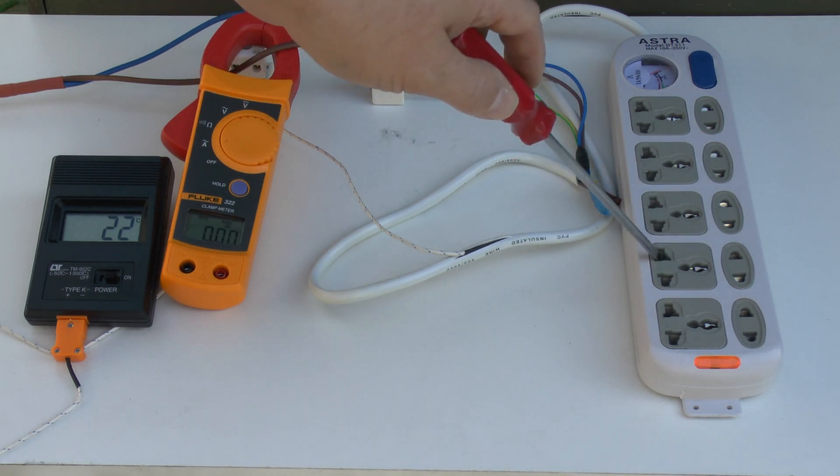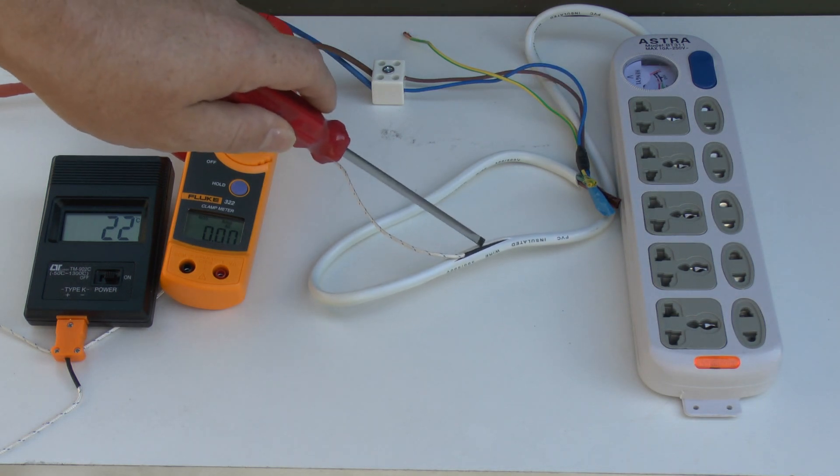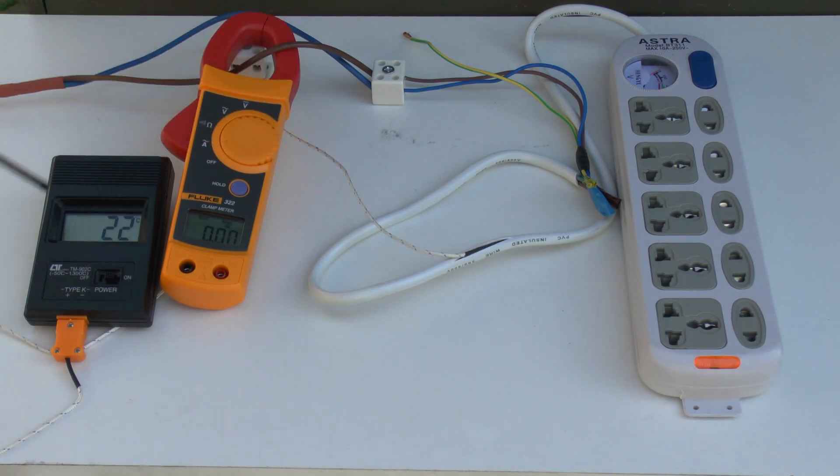Inside the adapter I've created a short circuit fault. Here we've got a thermocouple probe inserted inside the outer white covering that will display the temperature in degrees centigrade. So let's switch on the current and see how hot it gets.